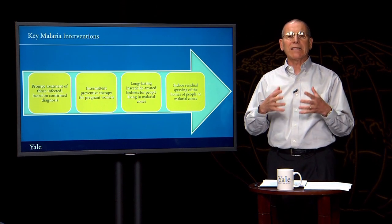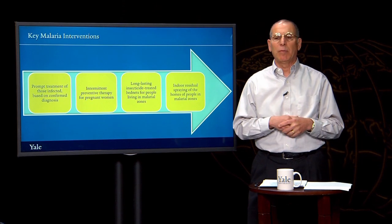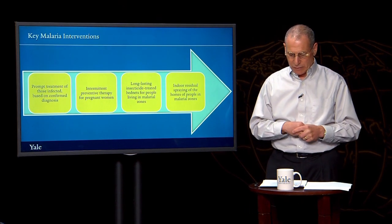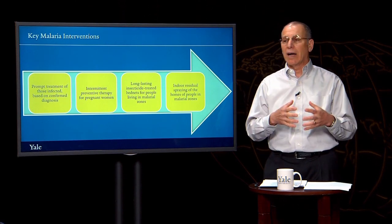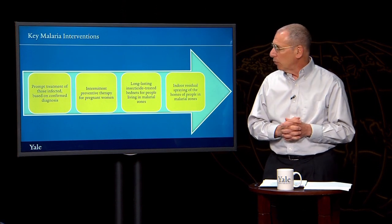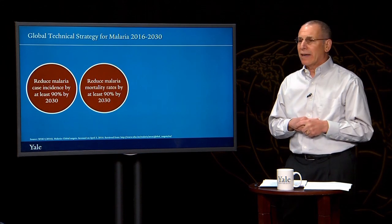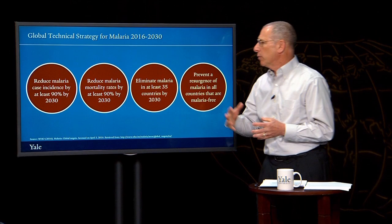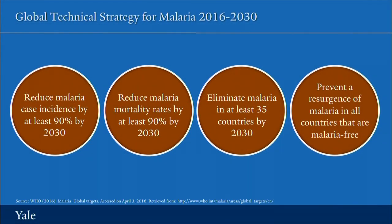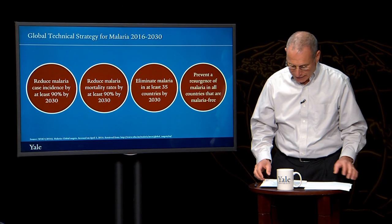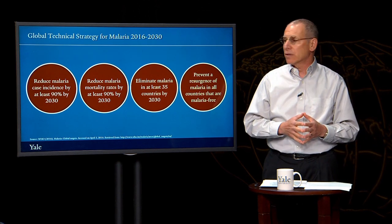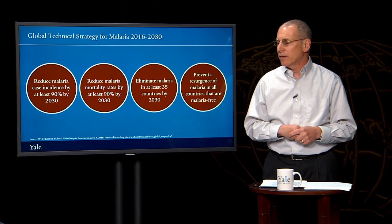Despite really substantial progress in reducing the burden of malaria and the number of malaria deaths, there remain some really critical challenges to trying to eliminate malaria. The world has set some important goals for trying to address malaria by 2030: to reduce malaria case incidence by at least 90%, to reduce malaria mortality rates by at least 90%, to eliminate malaria in at least 35 different countries, and to prevent a resurgence of malaria in places which are already malaria-free.